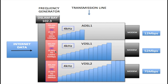On a VDSL1 line we go from 25 kilohertz right up to 12 megahertz — much higher than ADSL1's 1 megahertz. So we have many more 4 kilohertz bins here, and each one of these bins is filled with 56 kilobits of data, just like on the ADSL1 type line. Because we have more bins, we can have more data being sent from the DSLAM through to the modem. On a VDSL1 type line we have a maximum speed of 52 megabits per second.